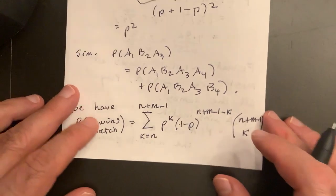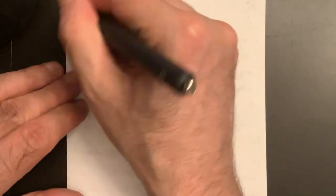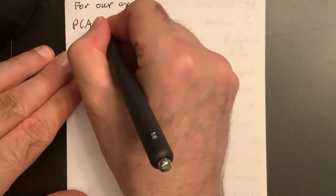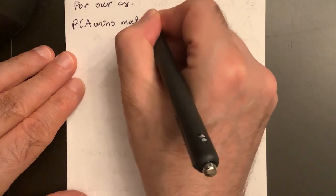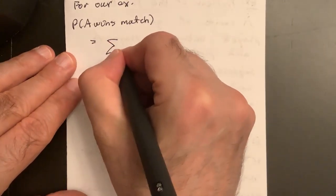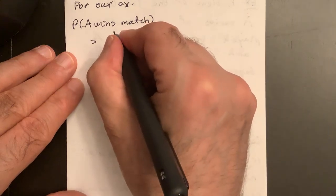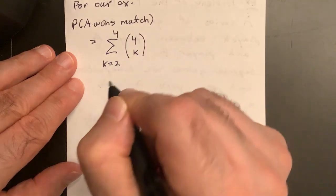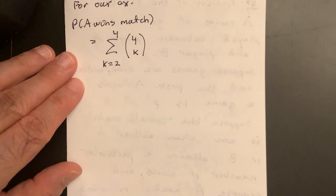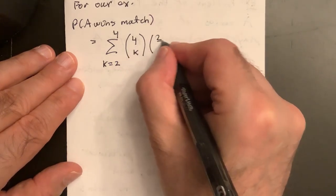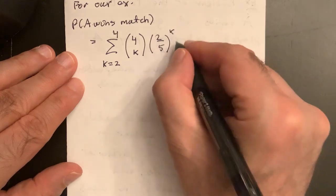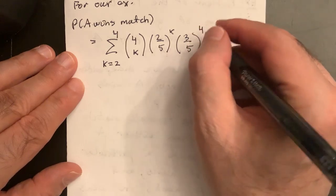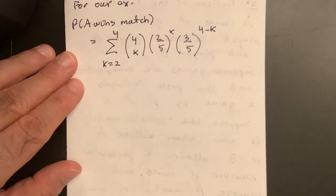Okay, so let's look for our example then. For our example, player A wins match is equal to the sum K equals two to four. Four choose K. I put it back in the right place. I have P, which is two-fifths to the K. And I have one minus P, which is three-fifths to the N plus M minus one minus K.